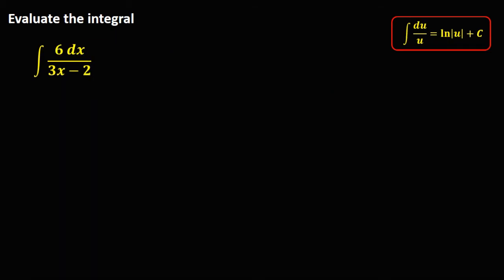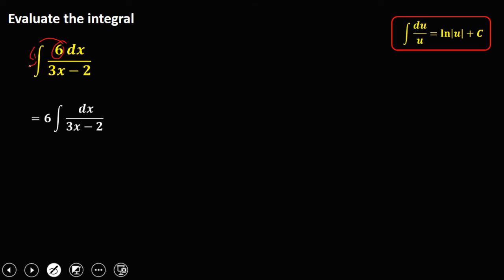For this next given, we first put the constant outside, giving us 6 times the integral of dx over 3x minus 2. Using u-substitution, u is the denominator, that's 3x minus 2. The derivative of u gives du equal to 3 dx. But on the given, the numerator is only dx, so we divide both sides by 3, giving du over 3 equals dx.